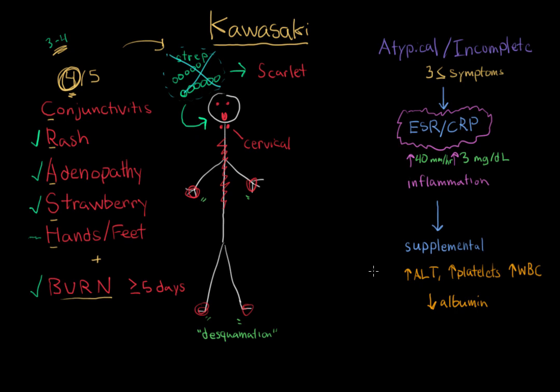I wouldn't get too bogged down with these supplemental labs. The important thing to remember is that if you have greater than or equal to 3 of these supplemental labs, you can diagnose Kawasaki disease and treat the patient. If you have less than 3 supplemental labs, then you're going to need to take a look at the heart using a heart ultrasound.